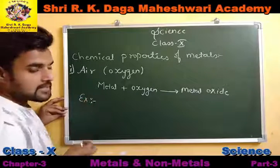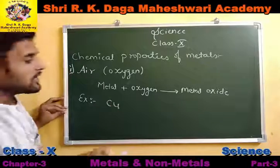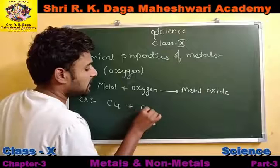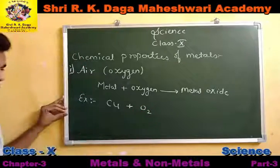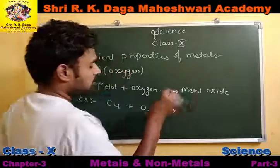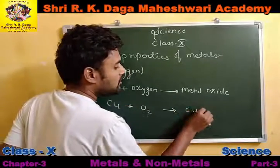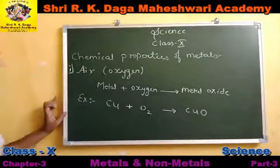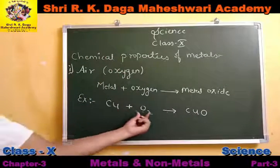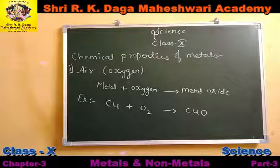Let's take a simple example. I want to make copper react with oxygen. Copper's formula is Cu, oxygen is O₂, and when copper and oxygen react, it will form copper oxide — CuO. So copper reacts with oxygen and forms copper oxide, but here the equation is not balanced.